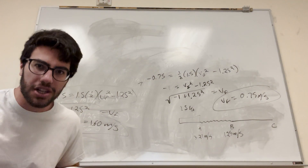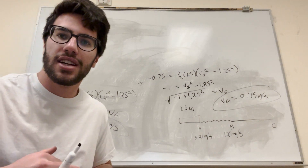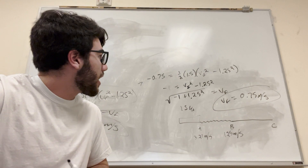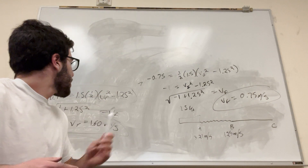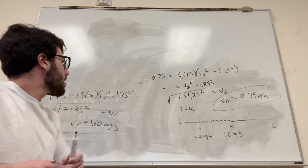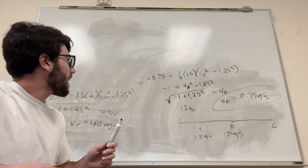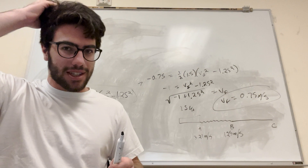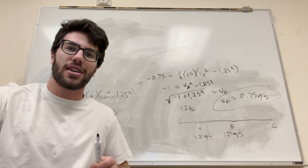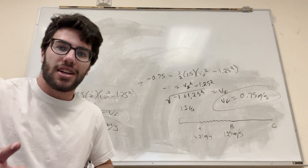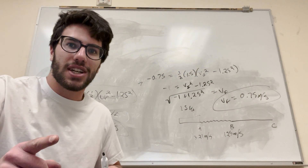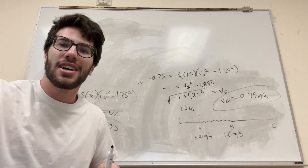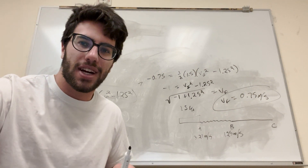All right, so there's your answers — that's how you solve this problem. You have to learn this formula: work is equal to one-half mass times delta v squared. Remember it. That's how you do these problems. Good luck on your physics homework, guys.